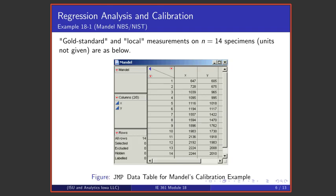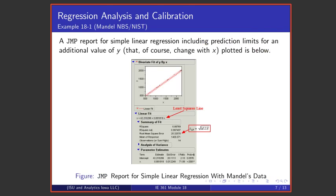Here's an example taken from Mandel, who was a famous worker at what was originally the National Bureau of Standards. It is today known as the National Institute for Standards and Technology. Measurements were weighed on 14 specimens, and both the truth about those specimens and measurements were recorded. And this is a JMP data table for Mandel's data set. If one does simple linear regression using JMP, one gets a report of the analysis that looks something like this.